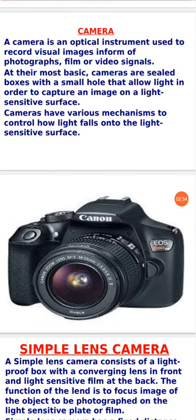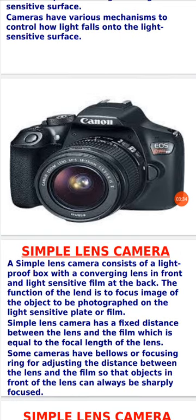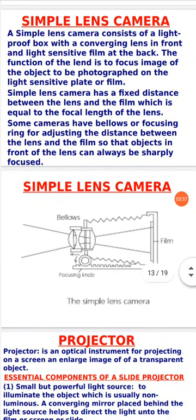Next, let's look at the camera. A camera is an optical instrument used to record visual images in the form of photographs, film, or video signals. At their most basic, cameras are sealed lightproof boxes with a small hole that allows light in to capture an image on a light-sensitive surface. What we want to look at today is the simple lens camera, to see the application of lenses in producing images.